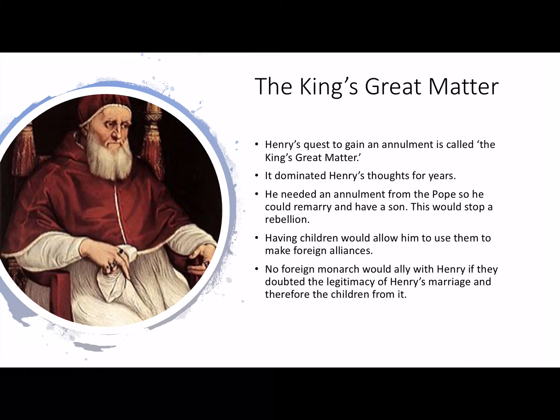It was important that the Pope annulled his marriage so that he could marry again and have a son. This would stop his fears of rebellion over who would be the next king. Another reason having children was important was because they could marry foreign princes and princesses to build alliances with other countries. However, no foreign monarch would forge an alliance with England if there were any doubts over the legitimacy of Henry's marriage to Anne Boleyn and therefore any children they had.